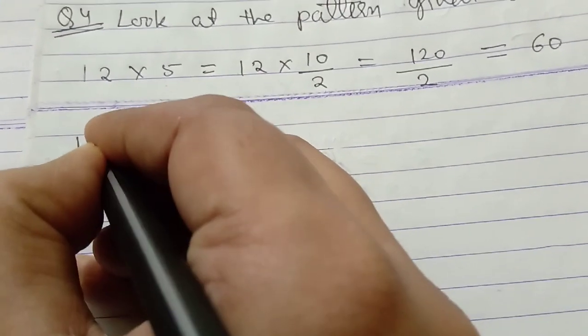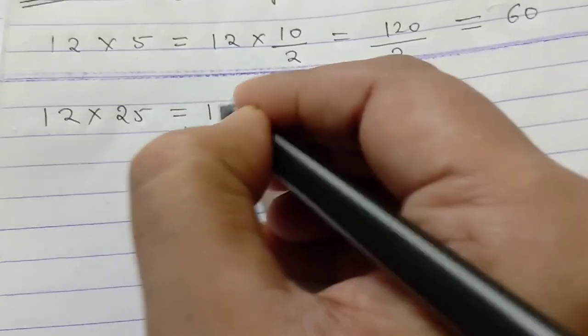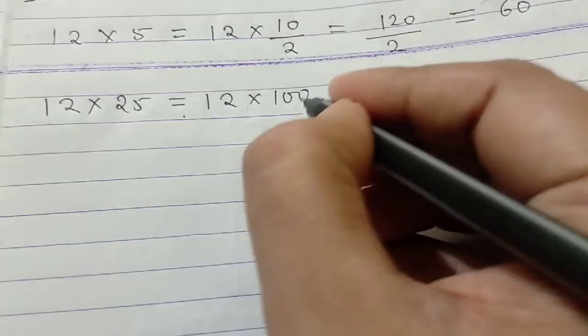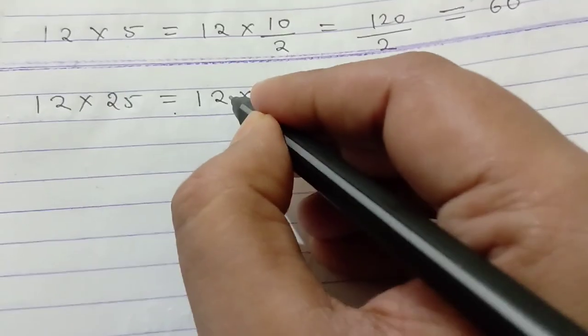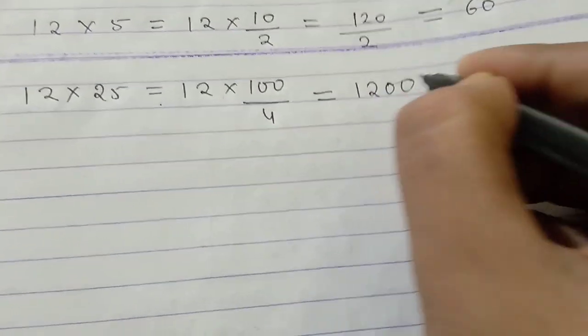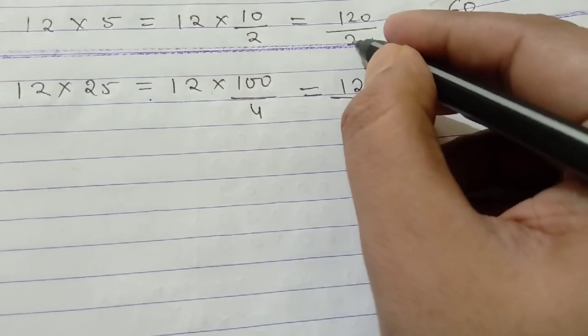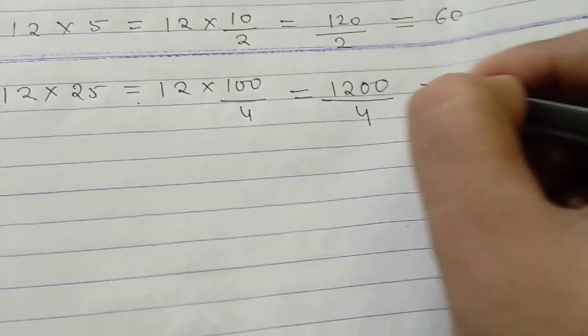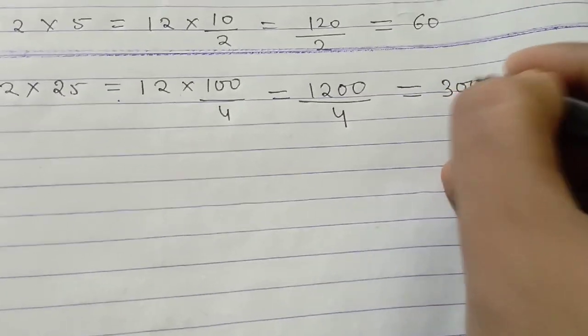Now, 12 multiplied by 25. Again, it has been given 12 multiplied by 100 by 4 equal to 12 multiplied by 100 gives 1200. And now, according to the pattern, here is 2. Now, it will become 4. Now, dividing the number 4, you will get 300.